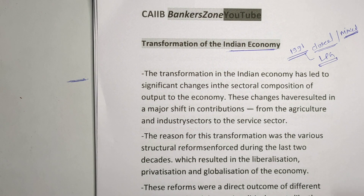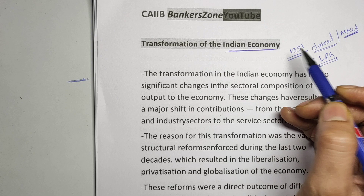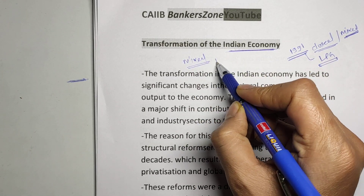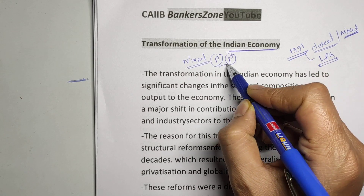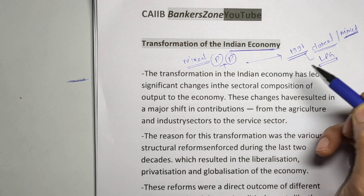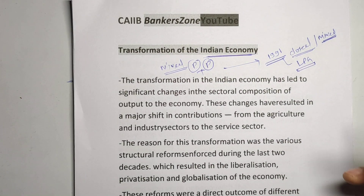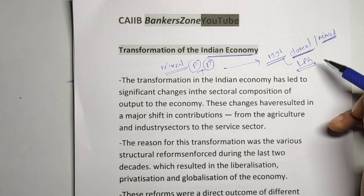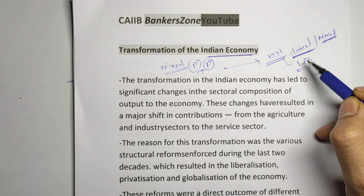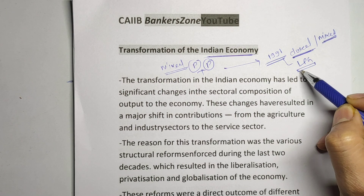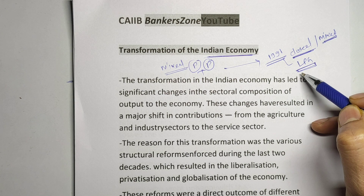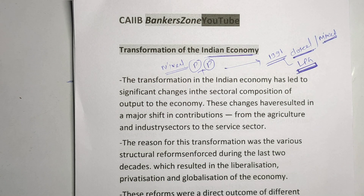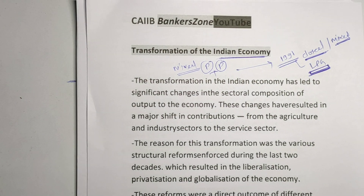After post-independence, India mainly adopted a mixed economy — that means we have both private and public sectors. But after the 1991 reforms, many sectors that were closed and mainly reserved for government were allowed to operate freely. Private players and foreign direct investment were allowed, and after the LPG reforms in 1991, our economy entered a boom phase with good growth.